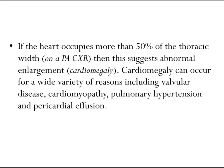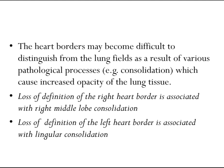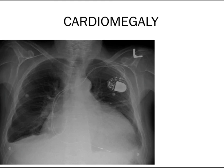Causes of cardiomegaly include valvular disease, cardiomyopathy, pulmonary hypertension, and pericardial effusion. Inspect the borders of the heart, which should be well defined in healthy individuals. The right atrium makes up most of the right heart border; the left ventricle makes up most of the left heart border. Heart borders may become difficult to distinguish as a result of various pathological processes such as consolidation. Loss of definition of the right heart border is associated with right middle lobe consolidation, and loss of the left heart border is associated with lingular consolidation.